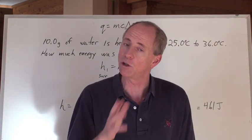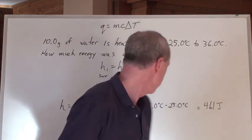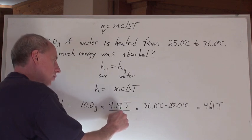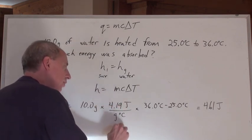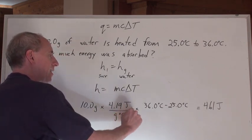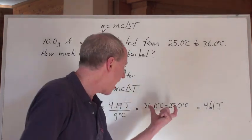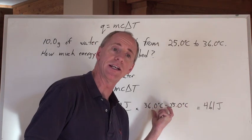So be consistent, and don't be sloppy. 10.0 grams times 4.19 joules per gram degrees Celsius, times the temperature change. I like to put in the numbers for the temperature change and not do the calculation.